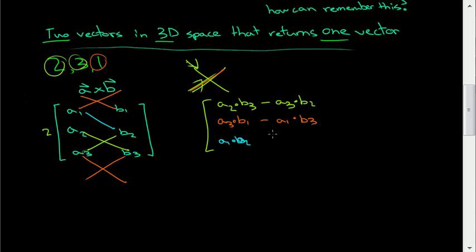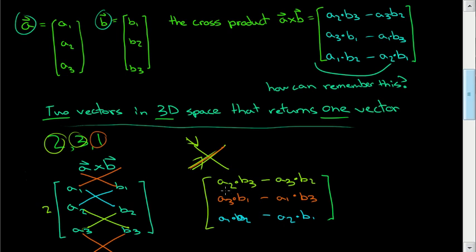a1 times b2 subtracted by, and then you go a2 b1. And so we've just found the cross product. And to compare this above, I mean, by the definition, we have a2 b3, a3 b2. It's all the same. So the way you can remember this